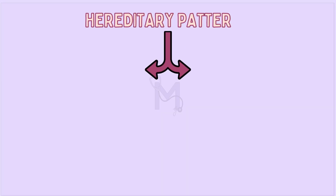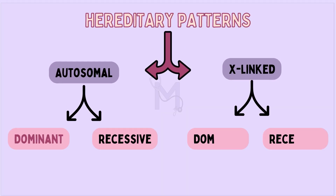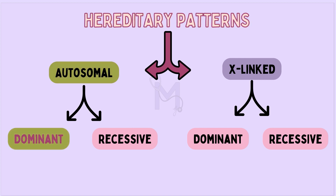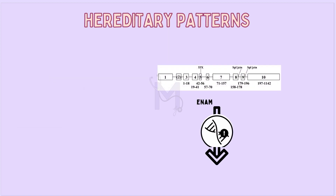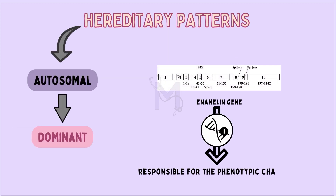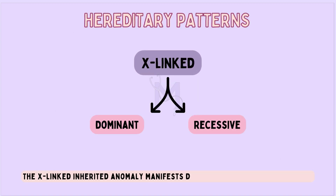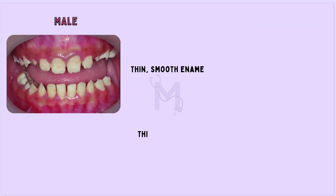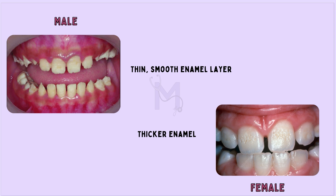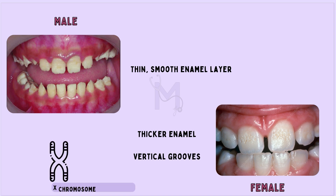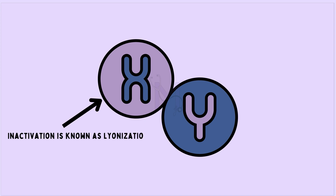The hereditary patterns tend to range from autosomal dominant or recessive to X-linked dominant or recessive. Most cases are inherited as an autosomal dominant trait, with mutations in the enamelin gene being responsible for the phenotypic changes. The X-linked inherited anomaly manifests differently in males and females, with males having a thin and smooth enamel layer and females having a thicker enamel, possibly with vertical grooves as a result of X chromosome inactivation, known as lyonization.